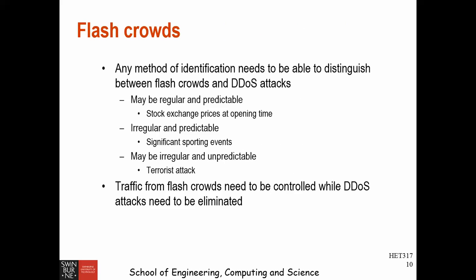Any method of identification needs to distinguish between flash crowds and DoS attacks. Flash crowds may be regular and predictable — like stock exchange prices at opening time — or irregular and predictable — like a sport event or results release — or irregular and unpredictable, like a terrorist attack.